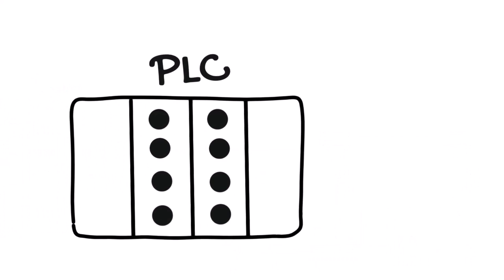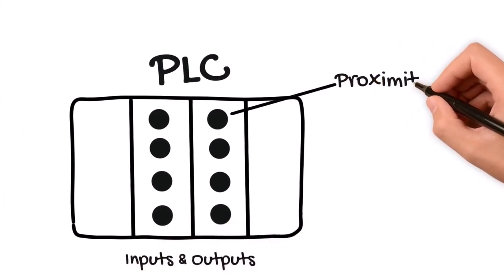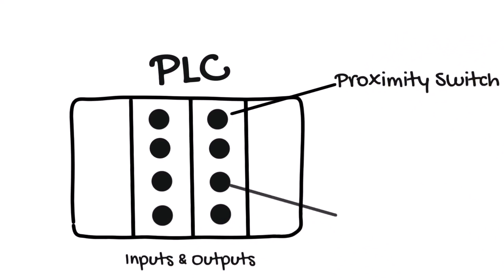PLCs contain digital and analog inputs and outputs that connect to sensors in the system, such as a proximity switch or a level sensor on a tank of material.